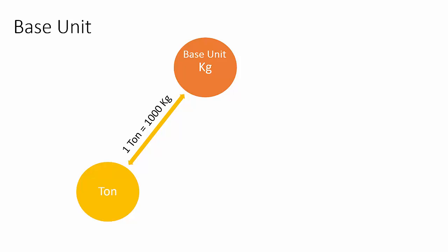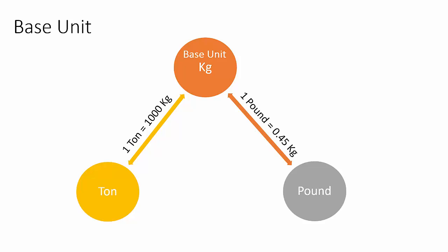For example, say you have a conversion rule that enables conversion from ton to kg, and another conversion rule that enables conversion from kg to pound. If you have specified kg as the base unit in the mass unit class, you can convert from pounds to ton without needing a direct conversion rule between those two units.